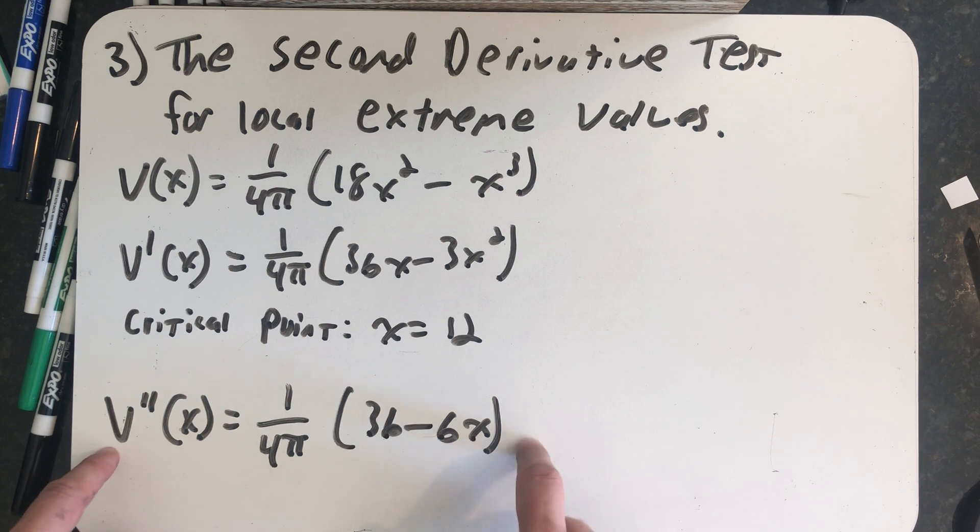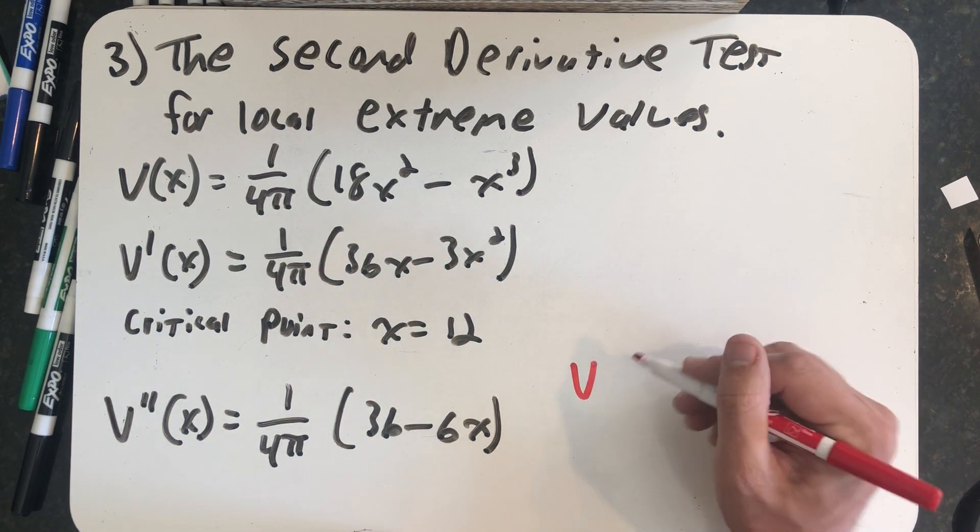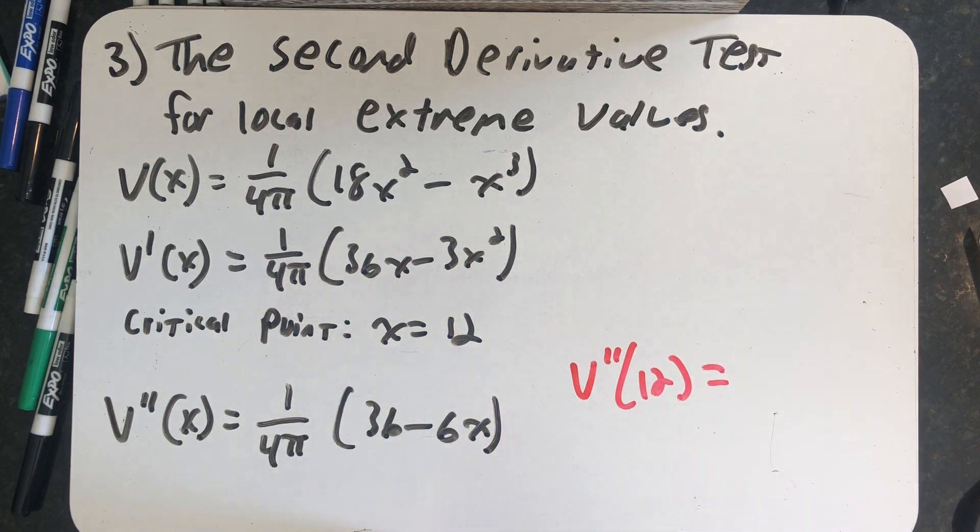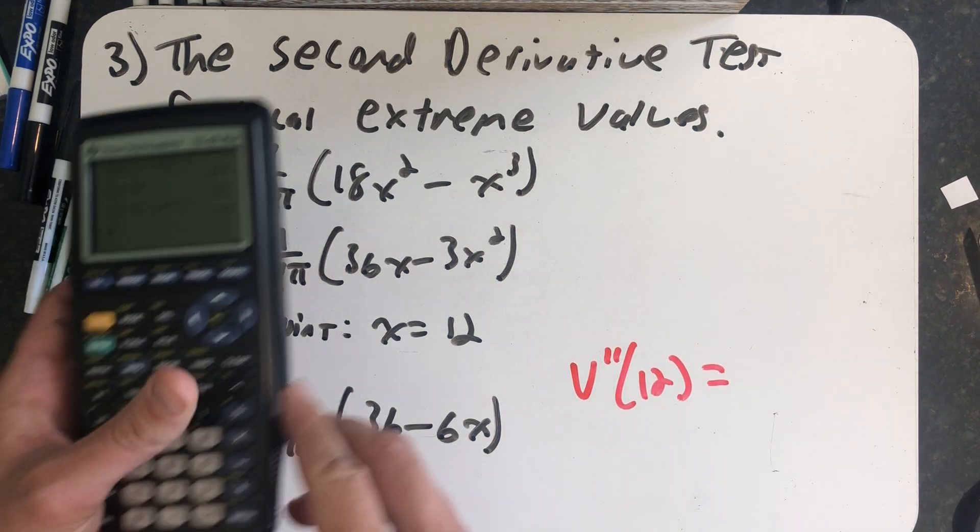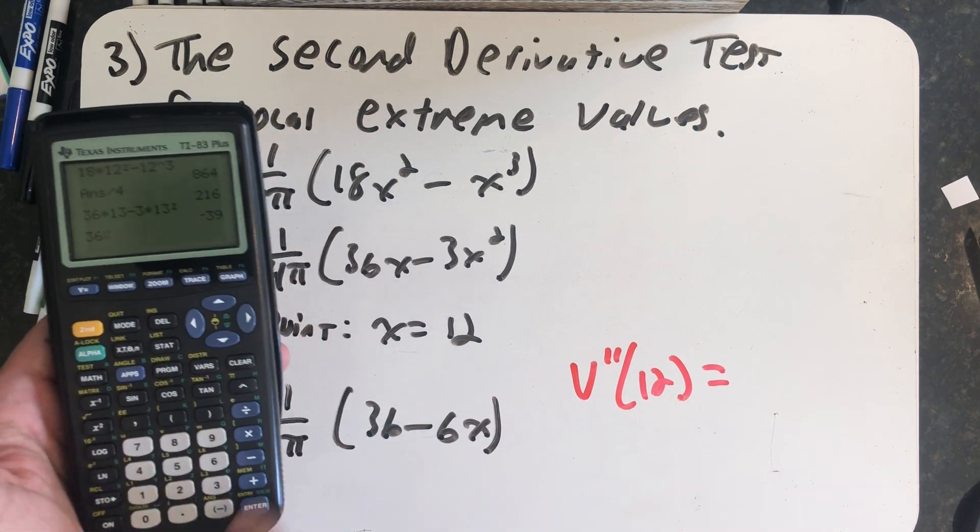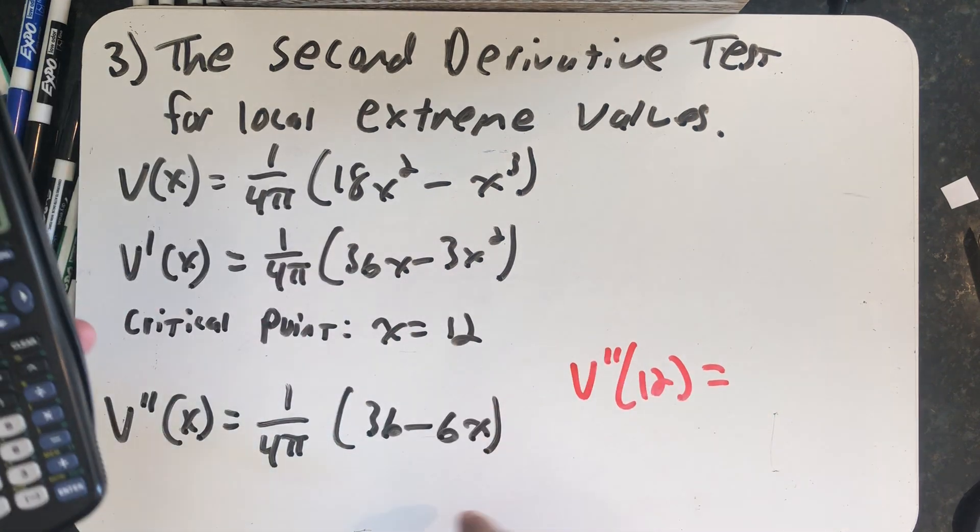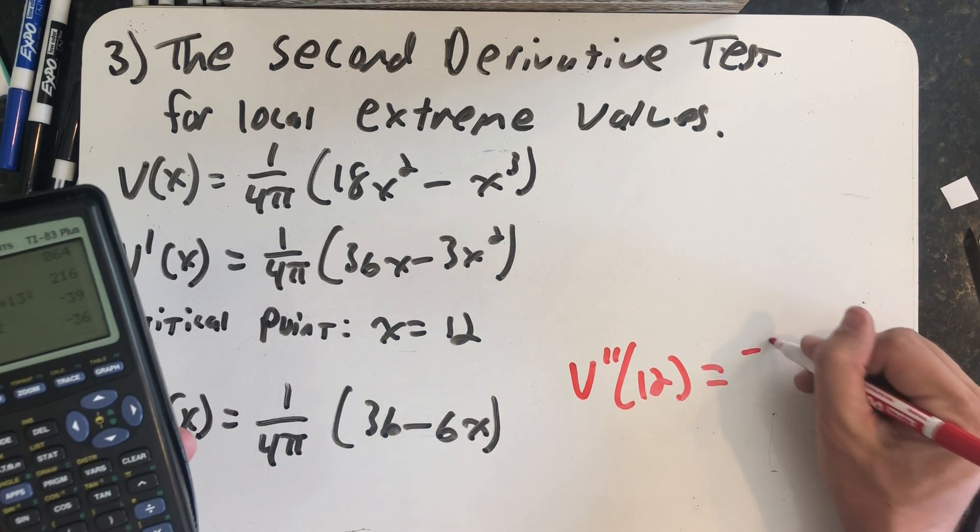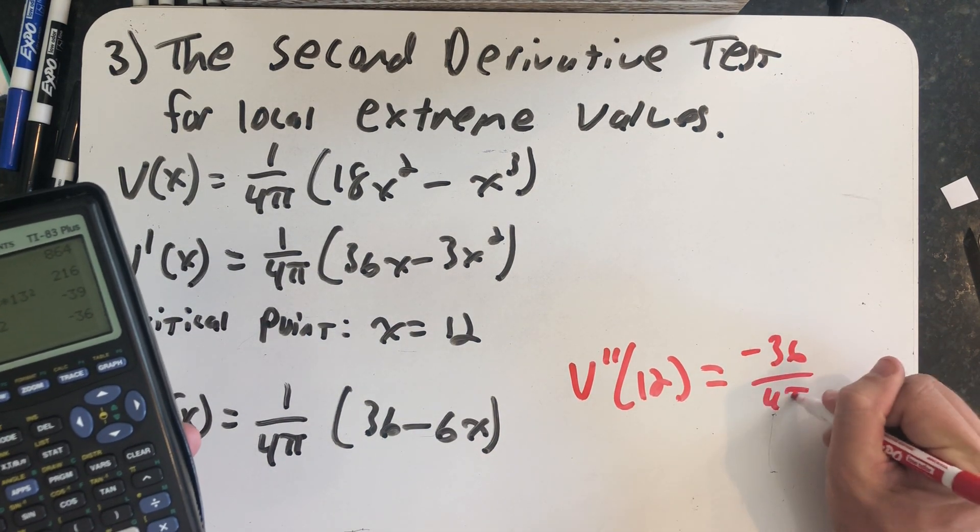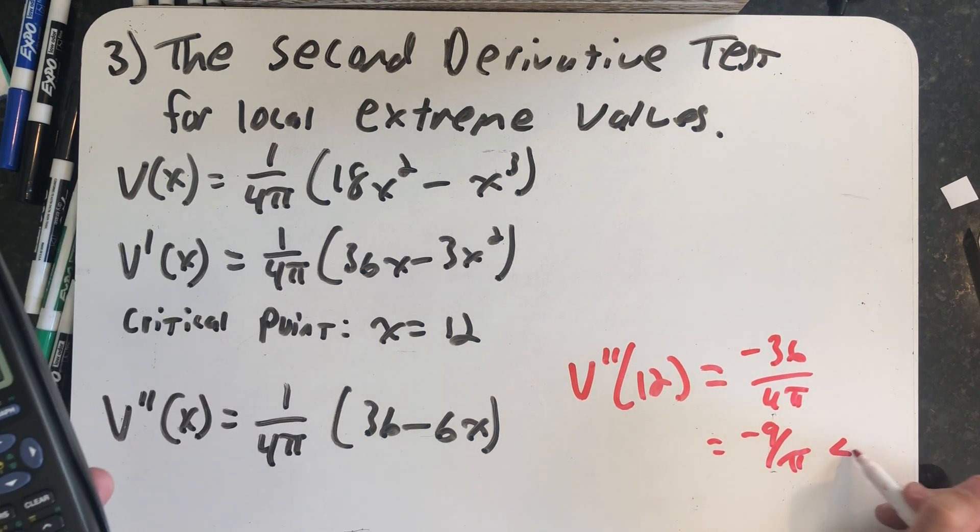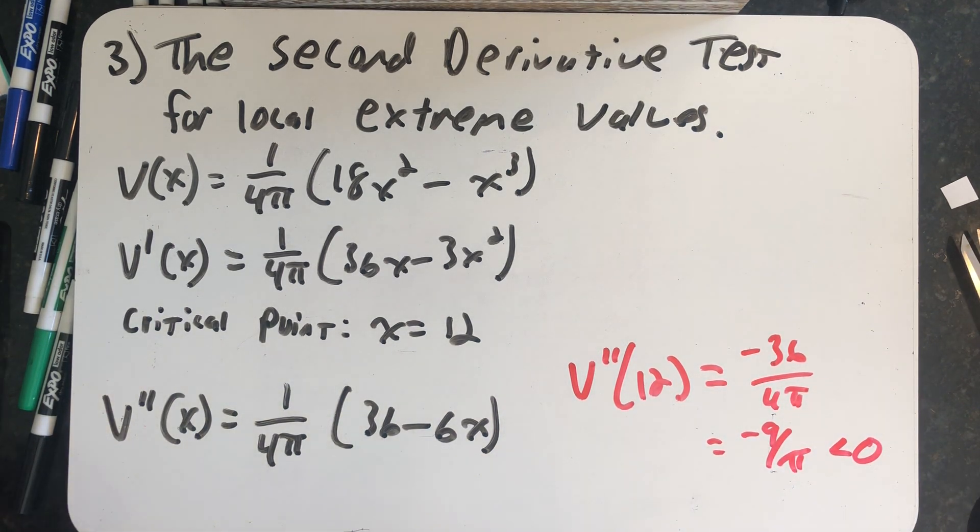There's nothing really hard here and this makes this a good choice for this problem because this is a very easy second derivative to calculate. I have my critical point and so I substitute it into the second derivative. And let's see, I have a 36 minus 6 times 12 and I would get a minus 36, 6 over 4π, which is minus 9 over π. The only important thing there is that is less than zero, which means at that critical point, I have a concave down shape.